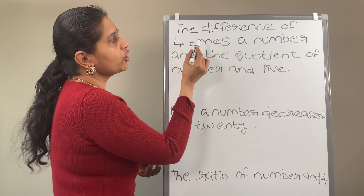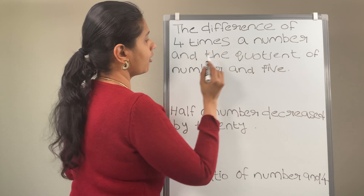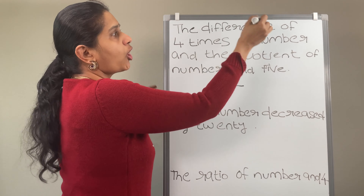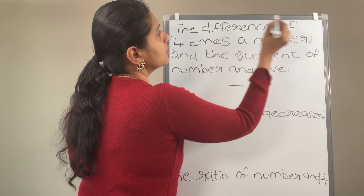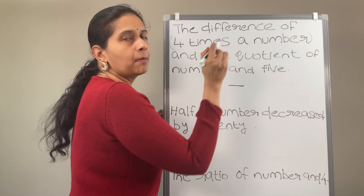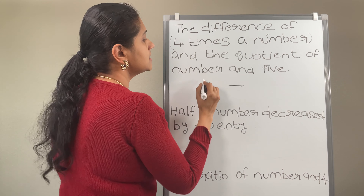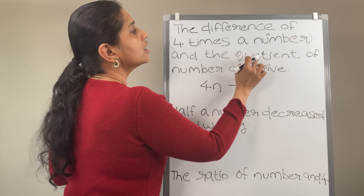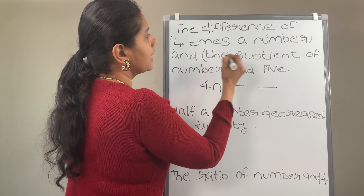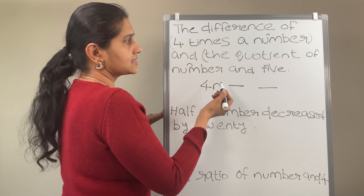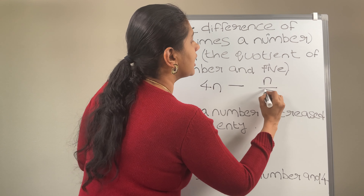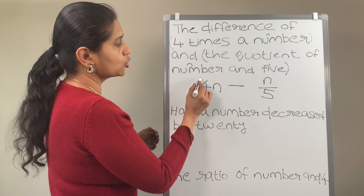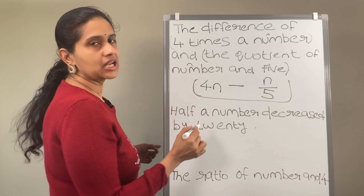The difference of 4 times a number and the quotient of a number and 5. The difference means we are going to subtract something. 4 times a number — consider n as the number — 4 times a number means 4n. So that comes first: 4n minus. And the quotient of a number and 5 — quotient means division. So n divided by 5. The solution is 4n minus n over 5.